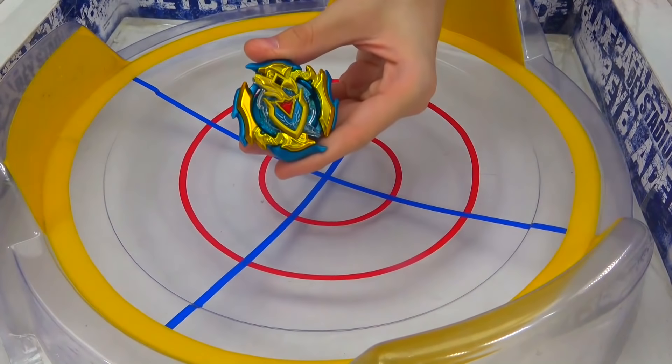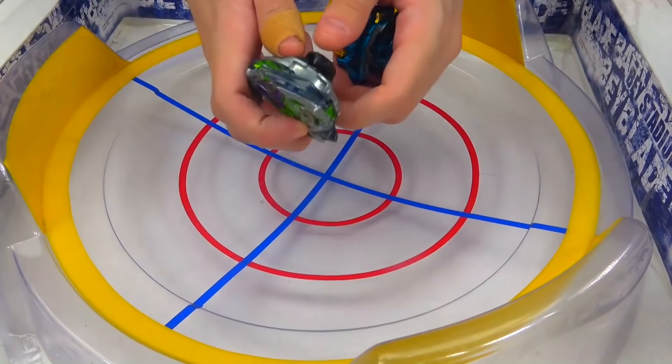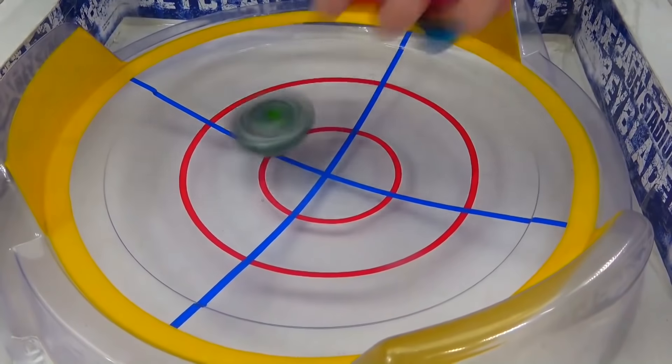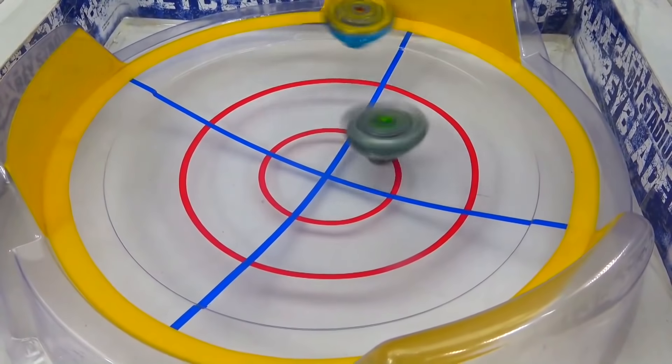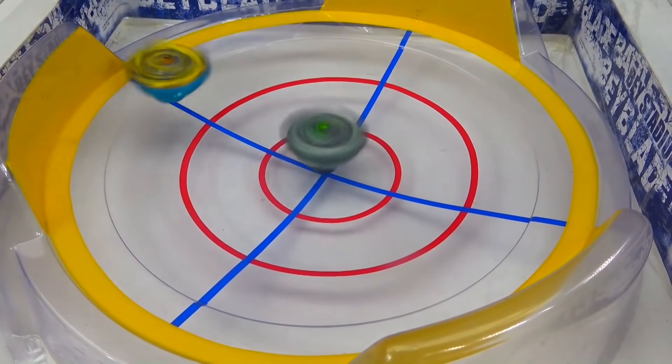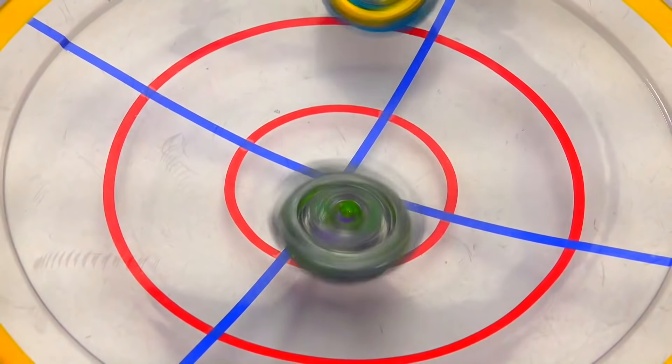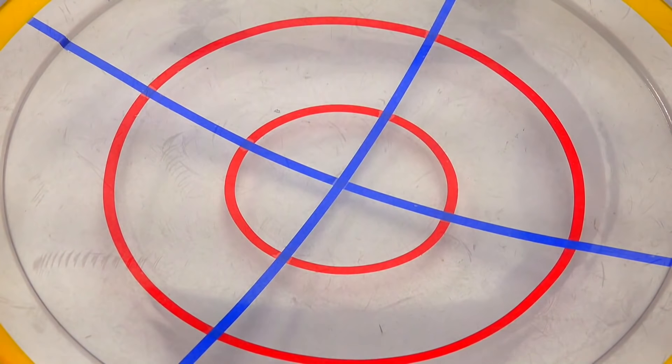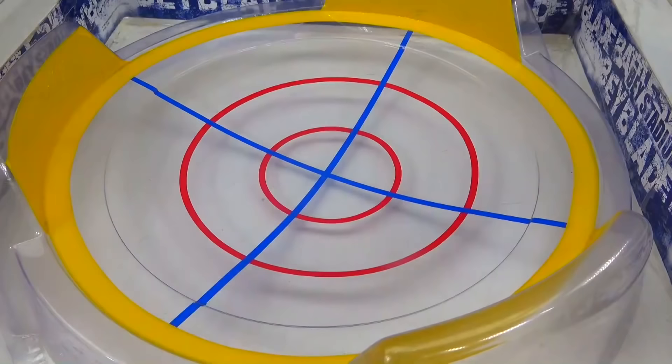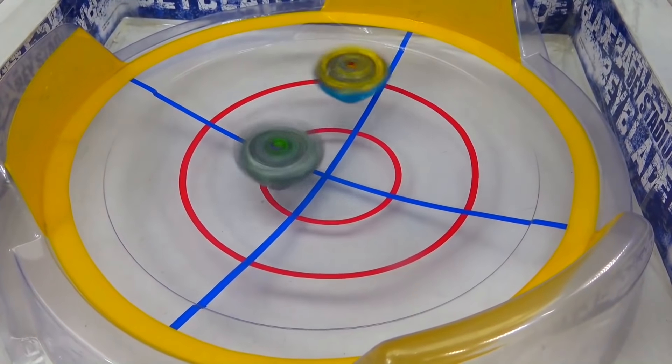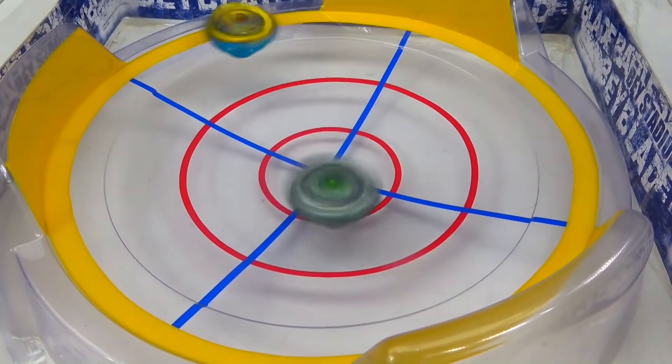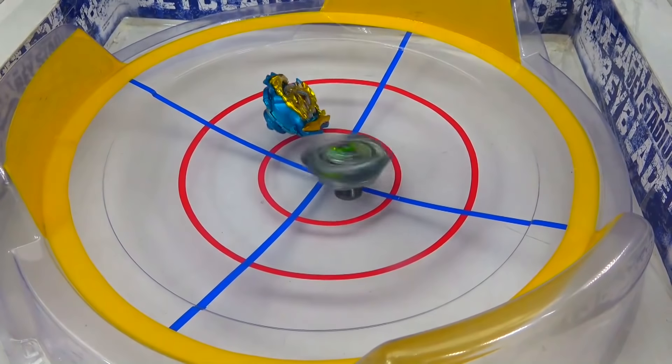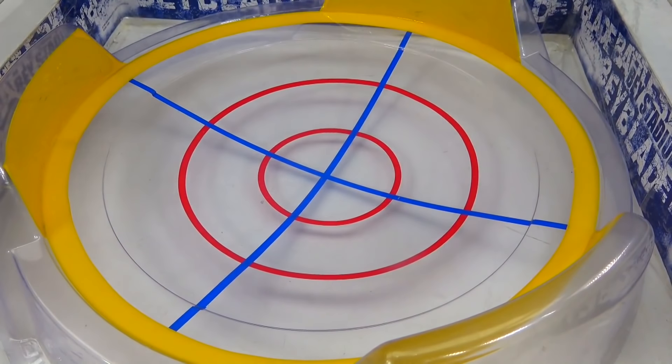First round is going to be Z Achilles. I believe that's Coro Coro against Random Booster Valkyrie. That should be five guard. Both these bays are actually going crazy. A few hits. Achilles is down. I guess Achilles can't make this Valkyrie budge, so the first round goes to the Valkyries.